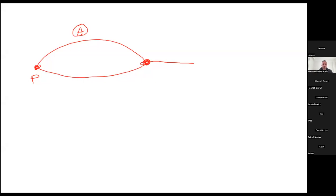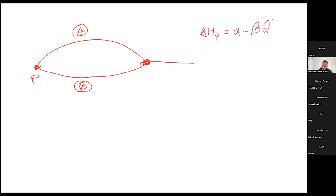I will call the second pump B. The pump will give to the system some energy in order to overcome the losses in the system. The delta H due to the pump is given by the expression alpha minus beta Q squared, where Q is the flow rate, and alpha and beta will be given to you.